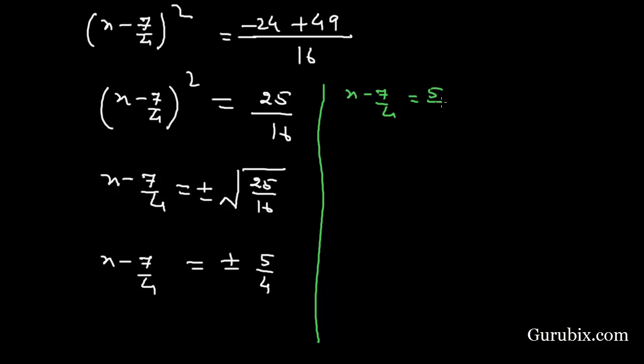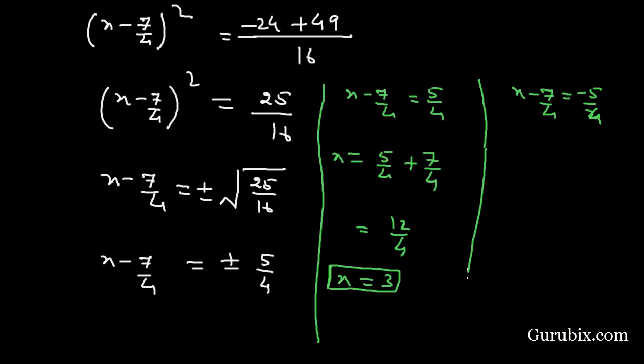x - 7/4, we take the positive value. If we further solve it, then x = 5/4 + 7/4, and this equals 12/4, and this equals 3. This means x = 3 in this condition.